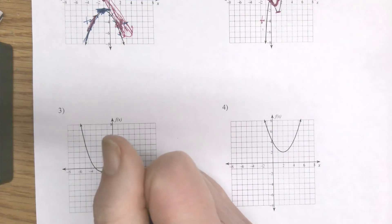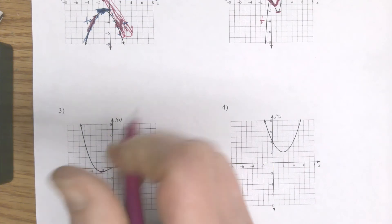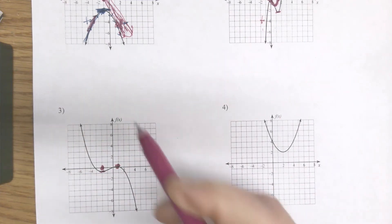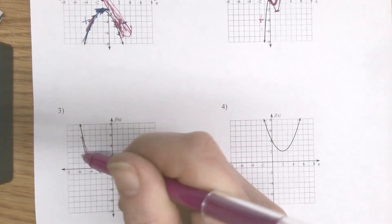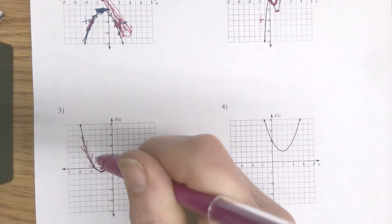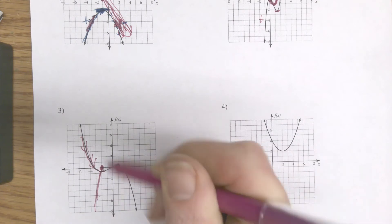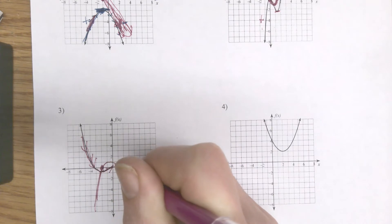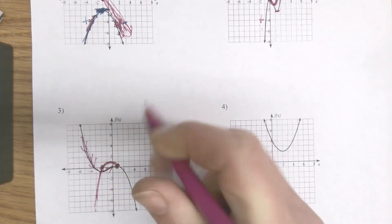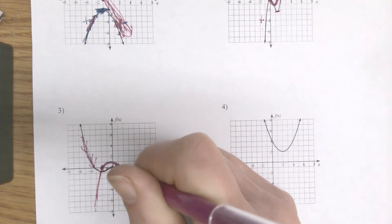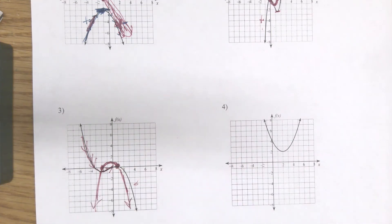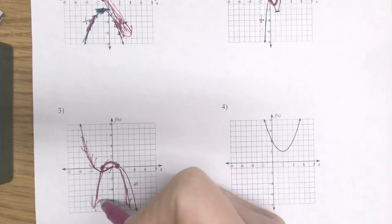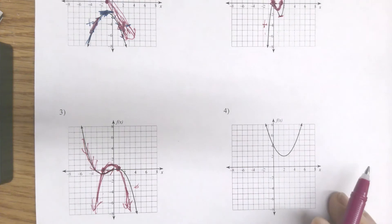Here's another one where I have changing directions — it looks like about here and there it changes directions. Following this, it's dropping, so it's going to be below the axis in that region. Then it's increasing a little bit here, so it's going to be above the axis and connect to the other point, and then I'm decreasing again, so it's below the axis.